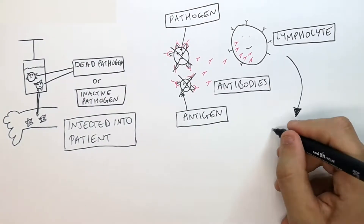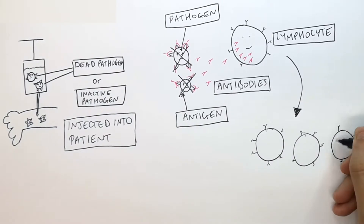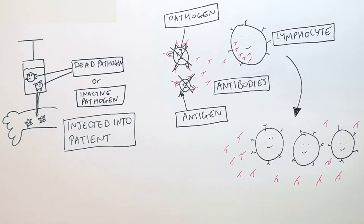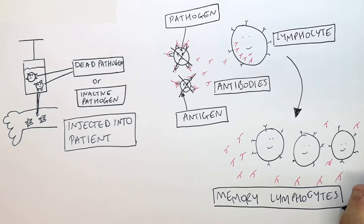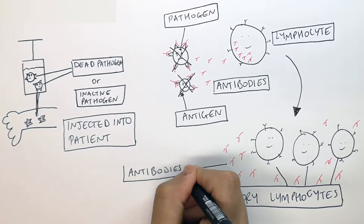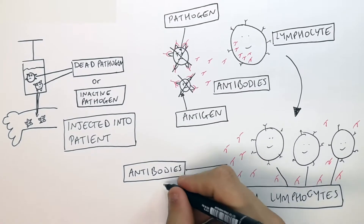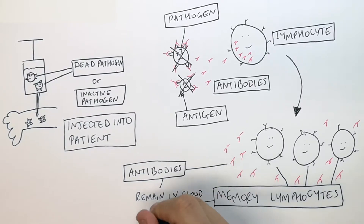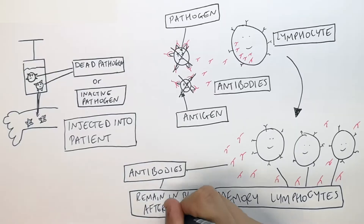The really important key word here is that the lymphocytes then turn into memory lymphocytes. These memory lymphocytes produce antibodies for that specific antigen. Both the antibodies and the memory lymphocytes remain in the blood after the infection.